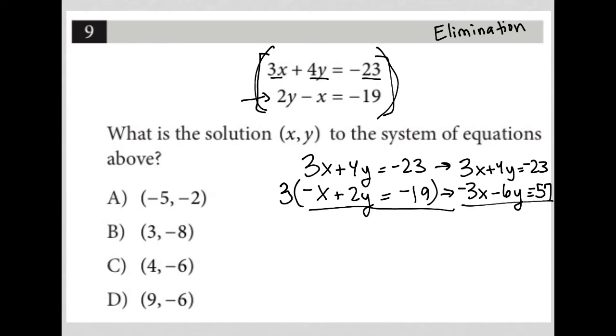When I combine these equations now, the x's are eliminated. It should have been plus 6y, not minus. The last step is to solve for the variable we have: 10y = -80. Dividing both sides by 10 gives y = -8, which is enough to answer this question since only one answer choice has -8 as the y value.